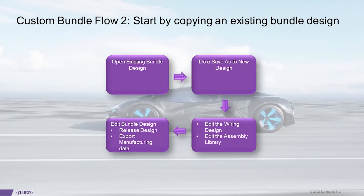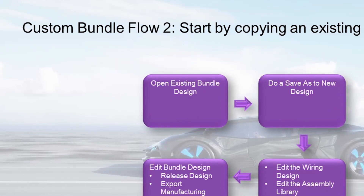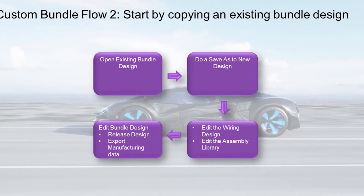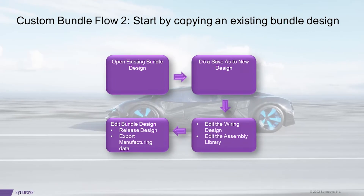In Custom Bundle Flow 2, we choose a bundle design which closely matches the customization requirement. We then make a save-as of this bundle design. The wiring design and assembly library will already be available in this bundle design. We can edit them according to project need, then import the edited wiring design in the bundle design, add passives according to project need, and then release the bundle design.